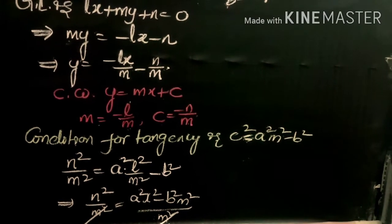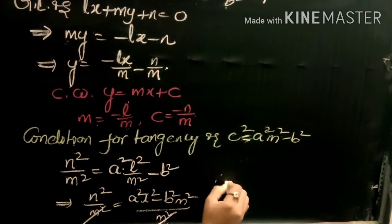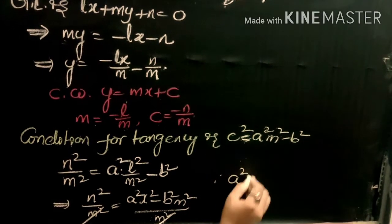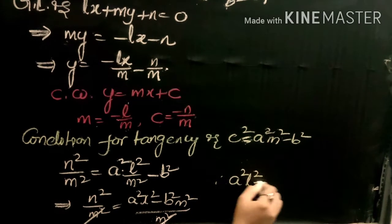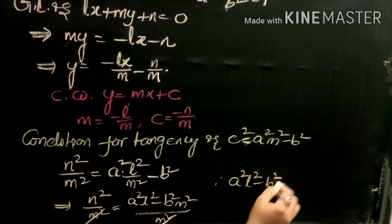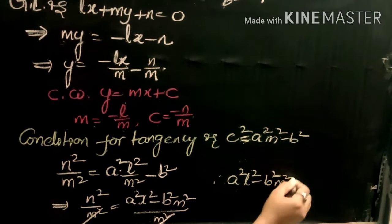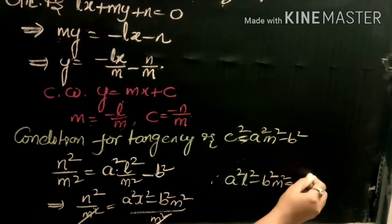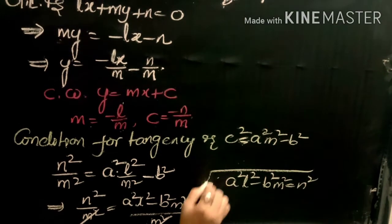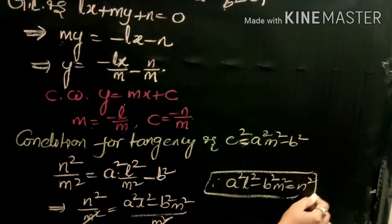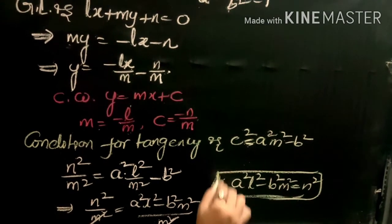Therefore a squared l squared minus b squared m squared equals n squared, which is the required result.